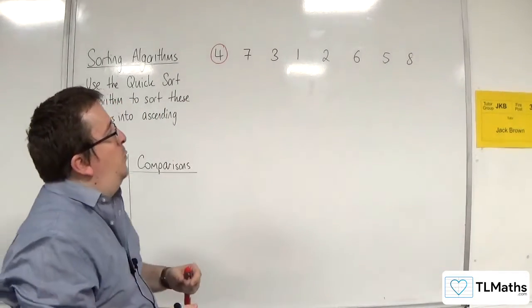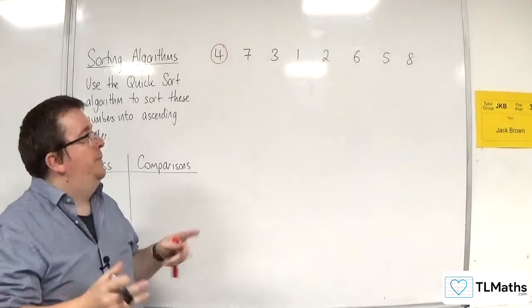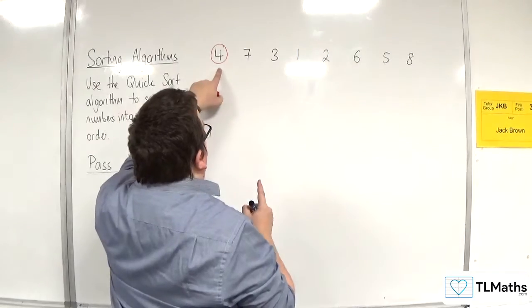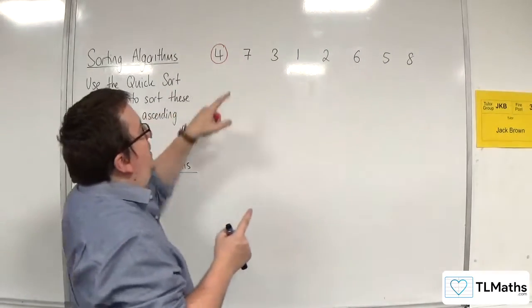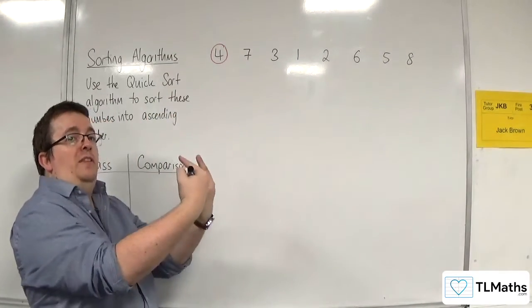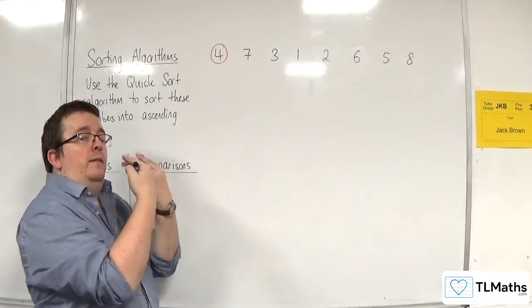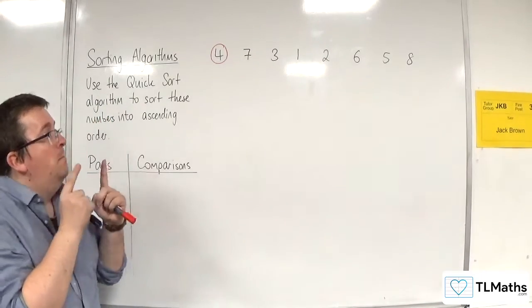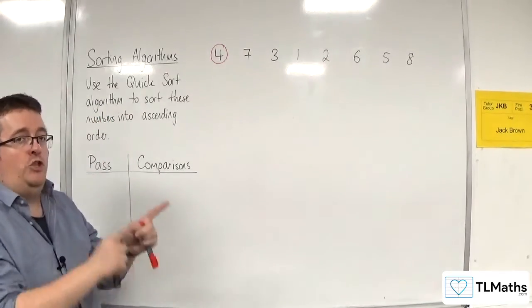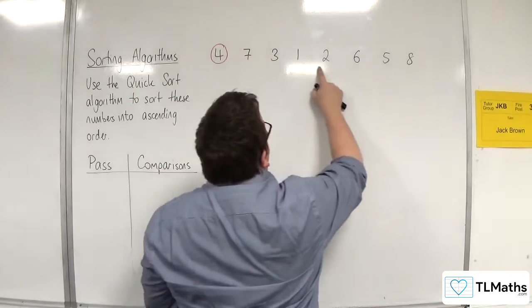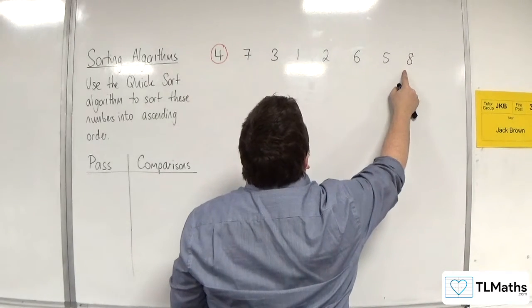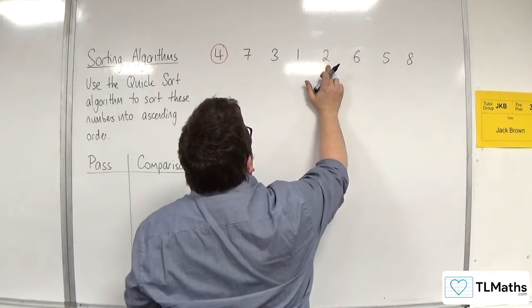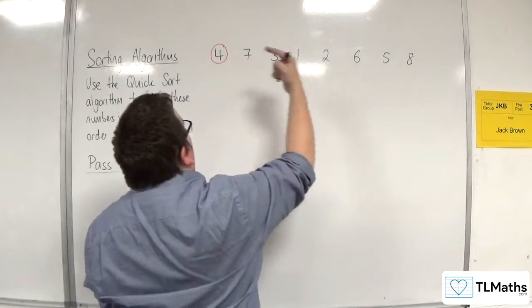So what we're going to do is we are now going to reorder the list, where any number that is less than four, because we're going into ascending order, any number that is less than four must go to the left of four, and any number that is larger than four goes to the right. Now, you need to be very careful when you do this, because you must not change the order of the numbers as they appear in this list. Now, what do I mean by that? Well, I know that three, one, and two are less than four, so they have to go to the left of four.